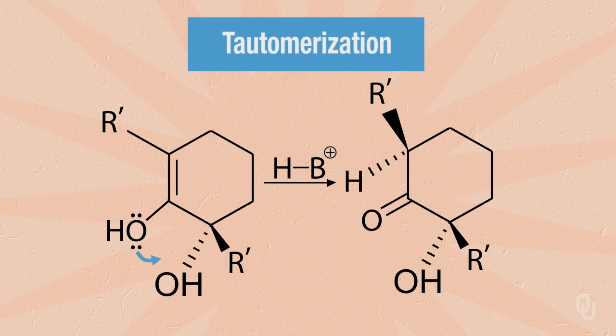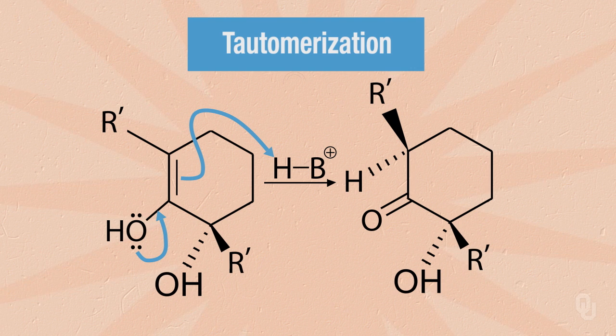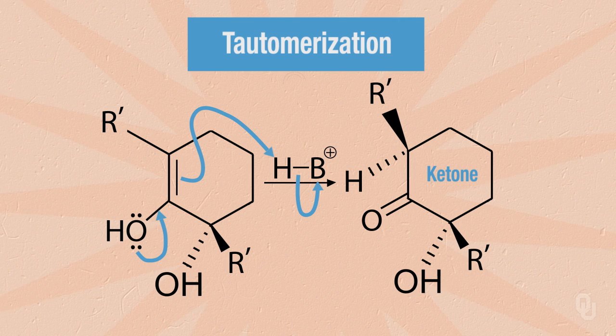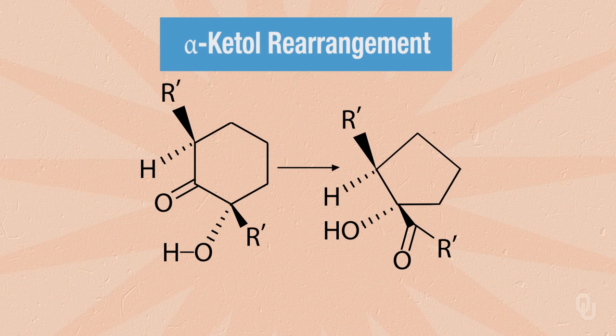The next step is actually going to be tautomerization — you might recall this from enol-keto tautomerization. This is not a resonance structure, but it's actually a chemical process; we're going to be making and breaking bonds here. The process starts by the lone pair on the oxygen coming down towards the double-bonded carbon, and those electrons going out and pulling a proton off of a protonated source. All we need is a proton source, and in a slightly acidic solution as we have in beer brewing, we're going to have a proton source. What that does is create a ketone that's now in a ketol form, which takes us into the next step: an alpha-ketol rearrangement.